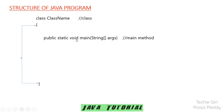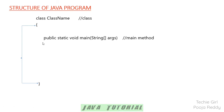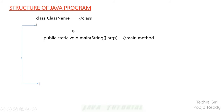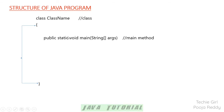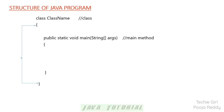A Java program should always include classes and objects. By using a class name we can create an object, but in this program I am not going to create any objects. So I am going to make use of static as a keyword. If you are not creating any objects in your program, then you can make use of static as a keyword.